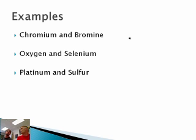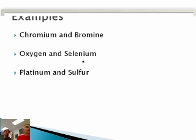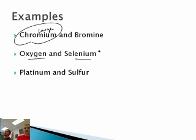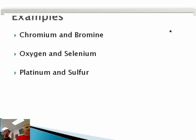Let's do an example. Which is bigger: chromium or bromine? Chromium is here and bromine is here — we're going across a period from left to right, and they get smaller as we go right. So the bigger one is chromium. Now, oxygen versus selenium: oxygen is element 8, selenium is element 34. As you go down a column, they get larger — so selenium is bigger. Selenium wins.